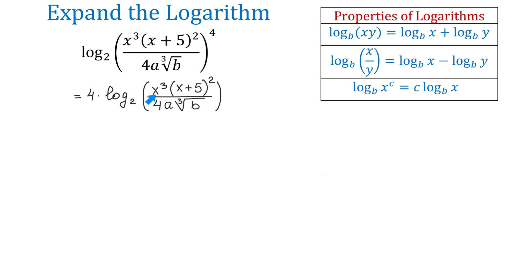In the numerator, we have a product of two factors: x cubed and x plus 5 to the second power. The logarithm of this product will be expanded as a sum of two logarithms. In the denominator, we have a product of three factors: 4, a, and cube root of b. When we expand, we will subtract the logarithm of each of these factors. Let's bring the 4 down and start a parenthesis.